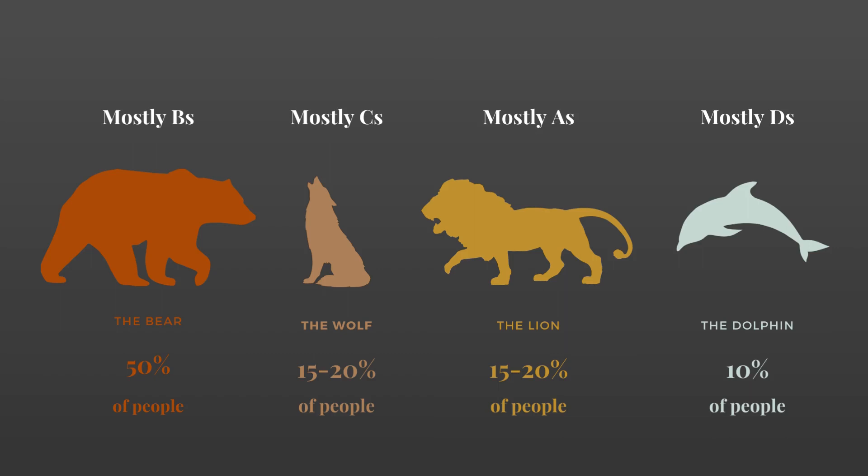And now to score it. If your scores were mostly Bs, you're a bear, just like most of the population. Mostly Cs, you would identify as a wolf. Mostly As is the lion, and mostly Ds, a dolphin. Now you might not align with your chronotype 100%, but this is just meant as a rough guideline, so take what serves you and leave the rest.